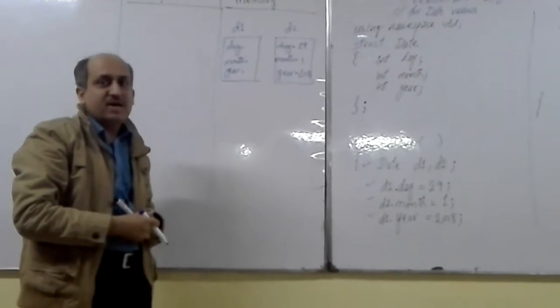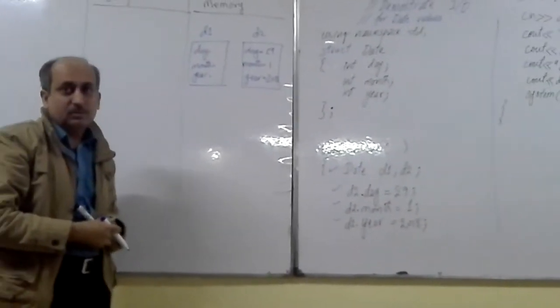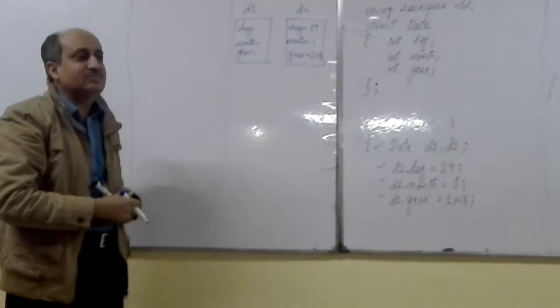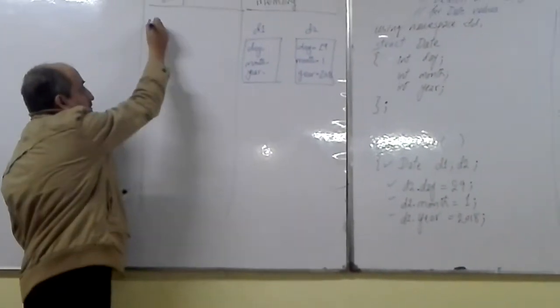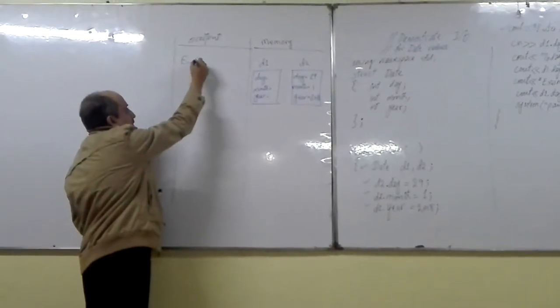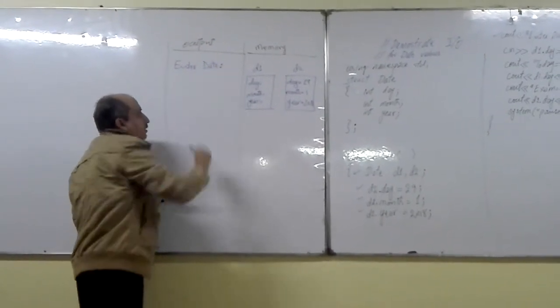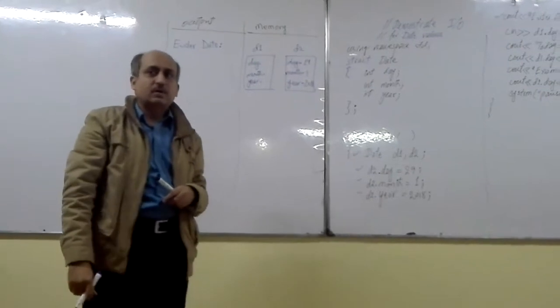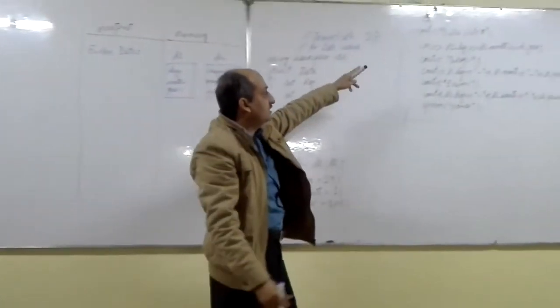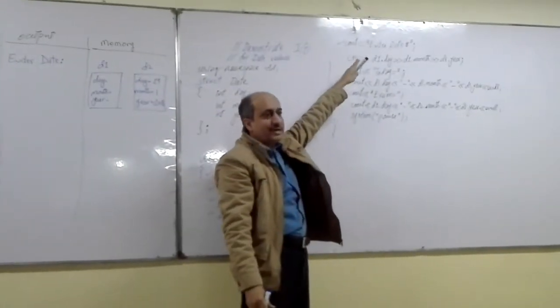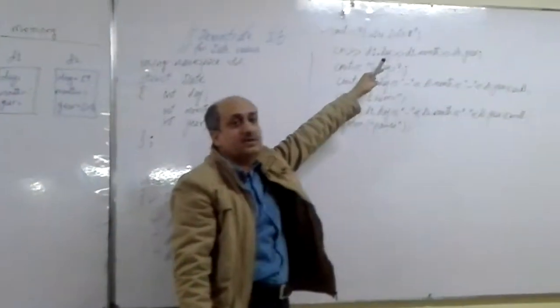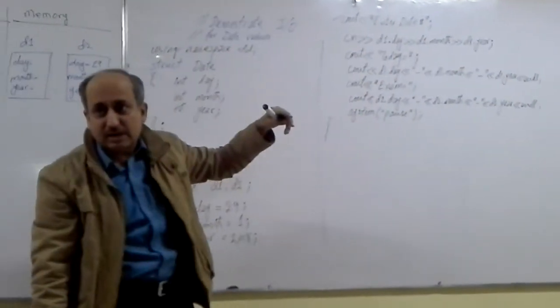which is a message. Enter date message is being printed. Enter date message will be printed on screen. Then control of execution will go to the CIN statement, and CIN will start taking values. These variables are being obtained from the user.